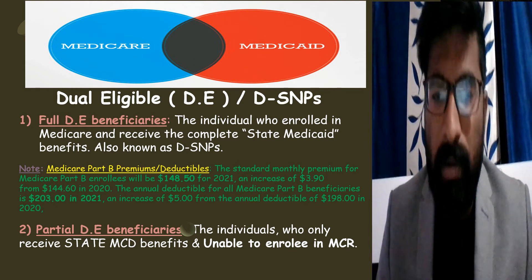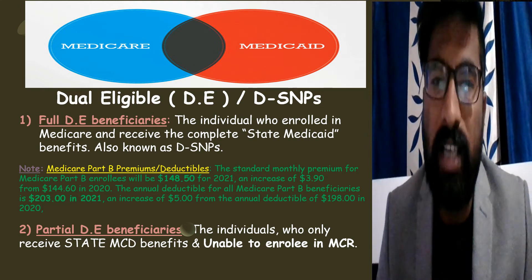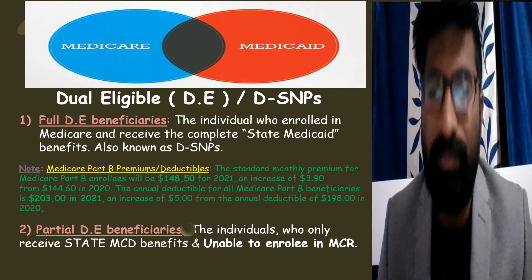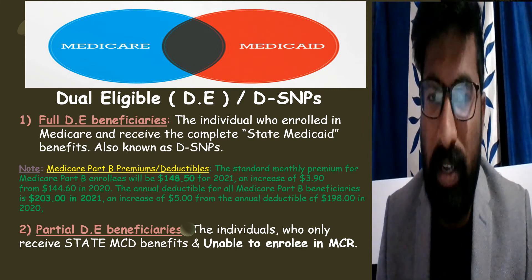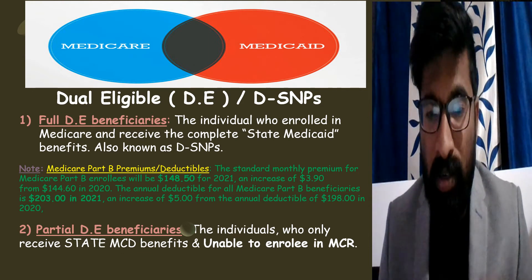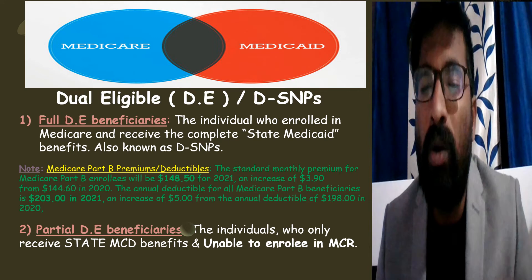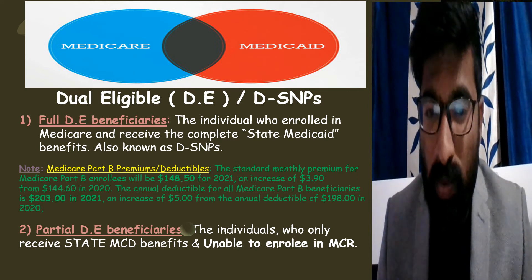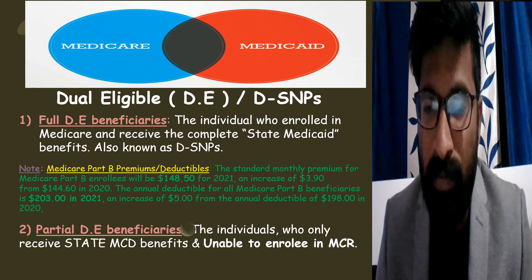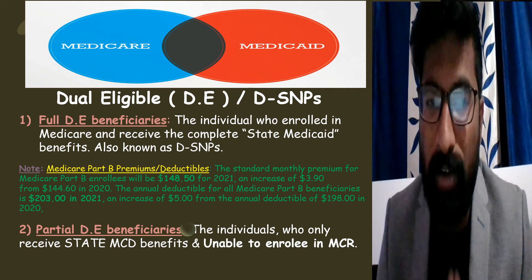The next type is partial dual eligible. A partial dual eligible beneficiary is someone who only receives benefits from their state Medicaid and is unable to enroll in federal Medicare. This is because their income is too low to enroll in Medicare, so they only receive state Medicaid benefits — hence the term partial dual eligible beneficiary.